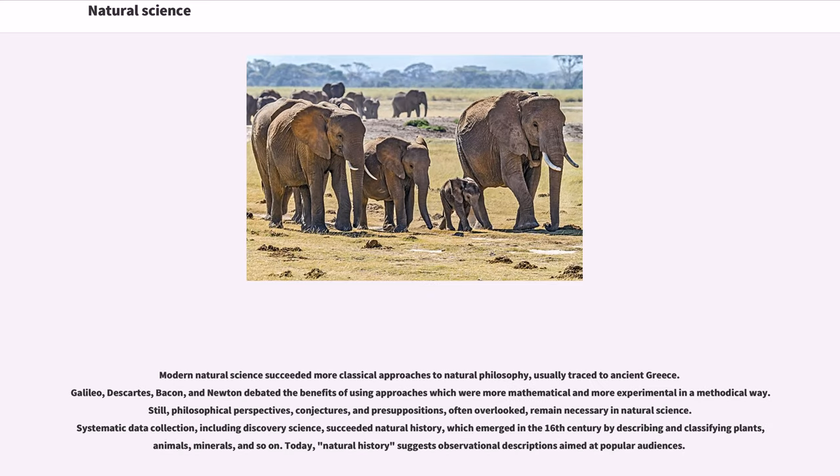Modern natural science succeeded more classical approaches to natural philosophy, usually traced to ancient Greece. Galileo, Descartes, Bacon, and Newton debated the benefits of using approaches which were more mathematical and experimental in a methodical way. Still, philosophical perspectives, conjectures, and presuppositions remain necessary in natural science. Systematic data collection succeeded natural history, which emerged in the 16th century by describing and classifying plants, animals, minerals, and so on. Today, natural history suggests observational descriptions aimed at popular audiences.